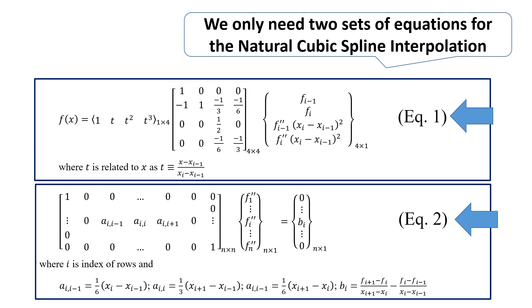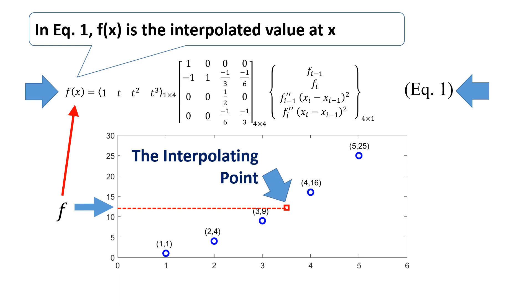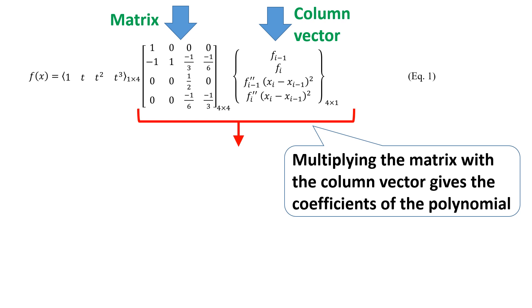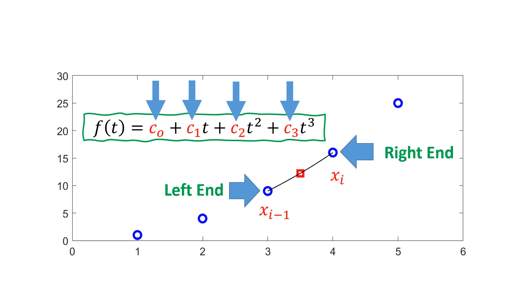In equation 1, f is the interpolated value at x. Multiplying the matrix with the column vector gives the coefficients of the polynomial. Coefficients are based on an interval.